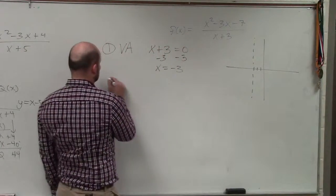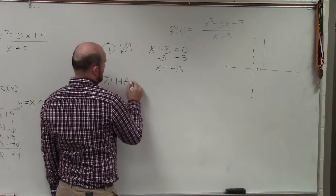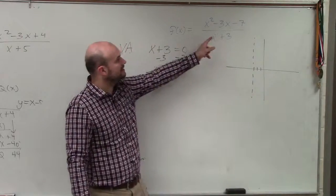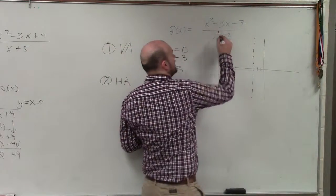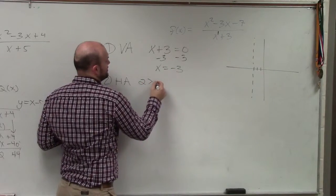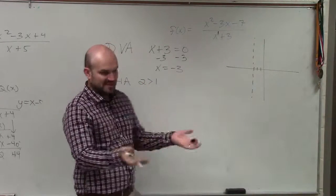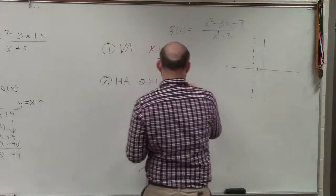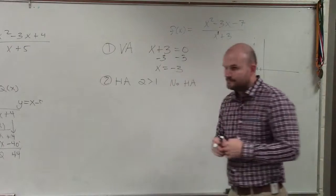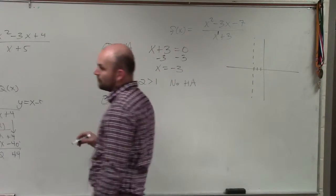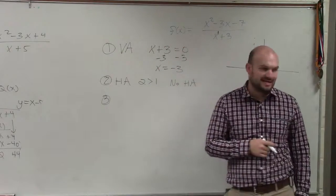Step number two, horizontal asymptote. All you can do for a horizontal asymptote is compare the degrees in the numerator and denominator. I notice in this case, the degree in my numerator is larger than the degree in my denominator. Based on the horizontal line test, we know that that does not have a horizontal asymptote. However, if we do not have a horizontal asymptote, we want to check for a slant or an oblique asymptote.